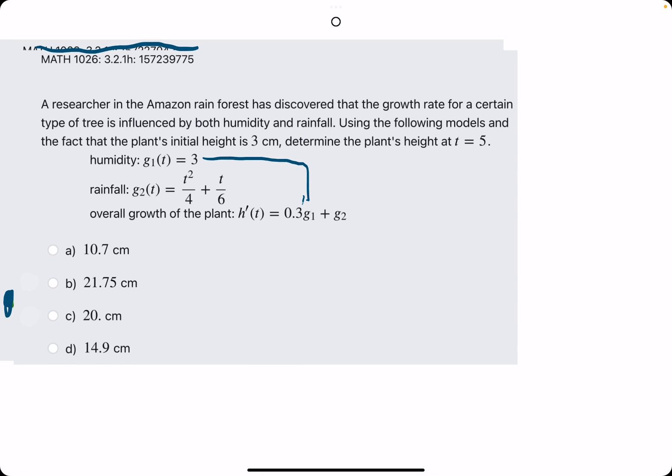Plugging in 3 to g1 and this whole g2 into g2. So h prime equals 0.3 times 3, so 0.9 plus t squared over 4 plus t over 6.